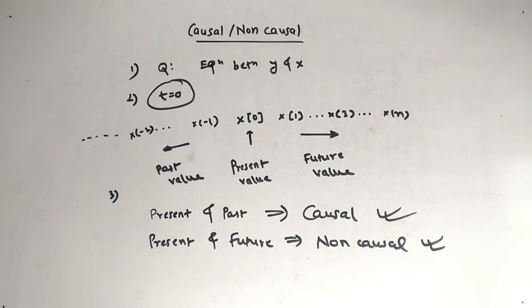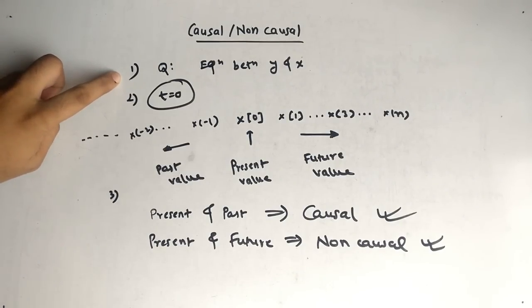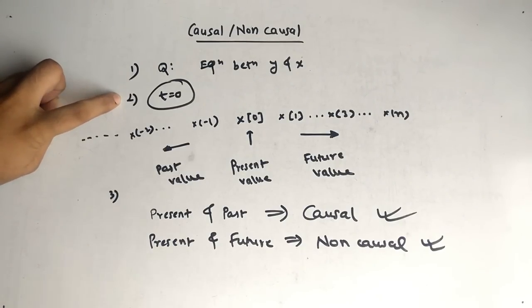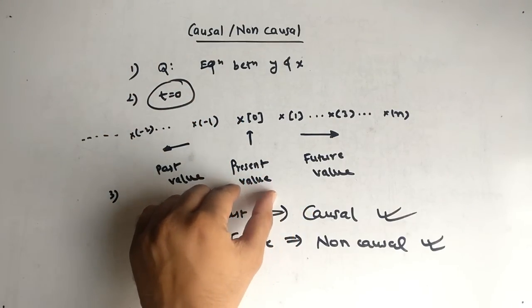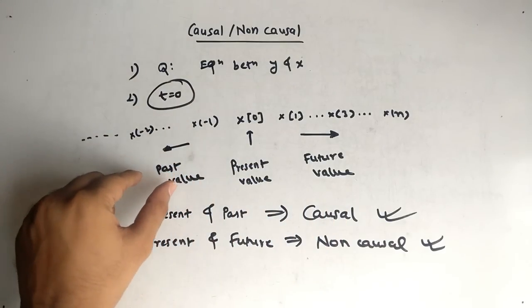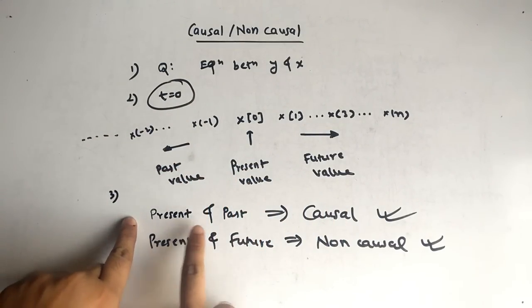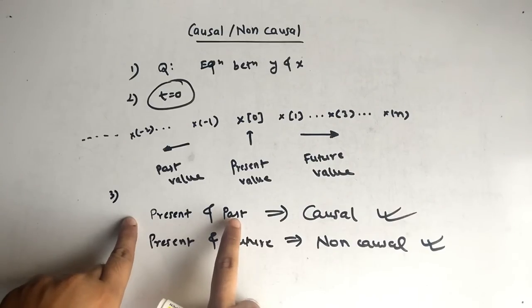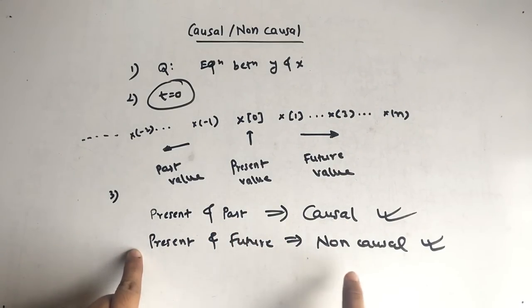Let's take a recap of the steps. First, the question is an equation in x and y. Put t equal to 0. After putting t equal to 0, you will get some combination — present and future, or past and present. If present and past is the combination, the answer is causal. If present and future is the combination, the answer is non-causal.